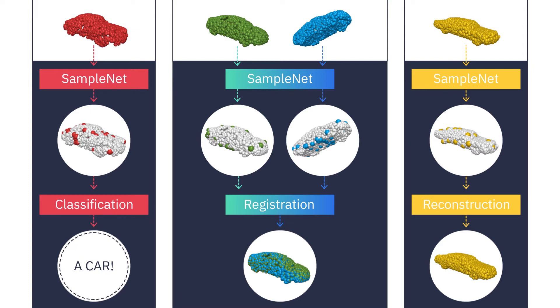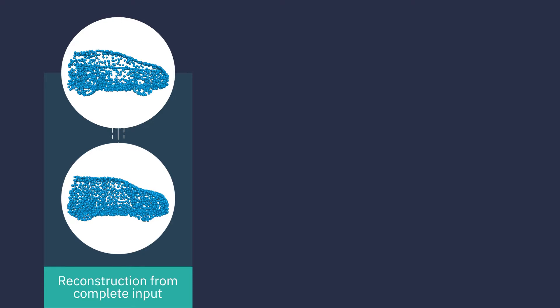What happens if we do not use our method? Let's see an example for reconstructing a point cloud from its samples. As a reference result, the point cloud is reconstructed from the complete input.